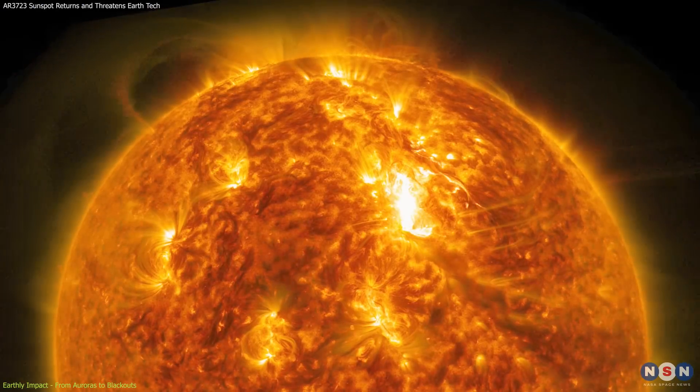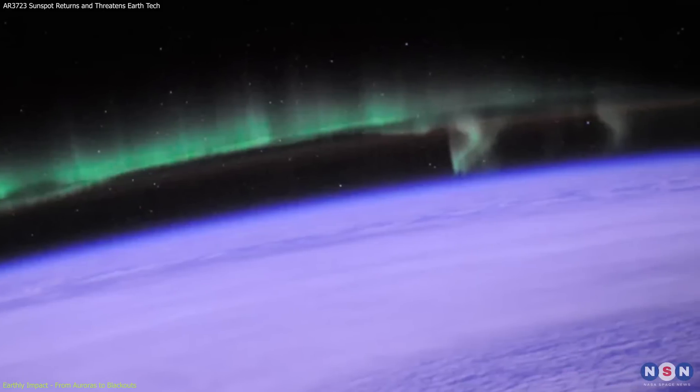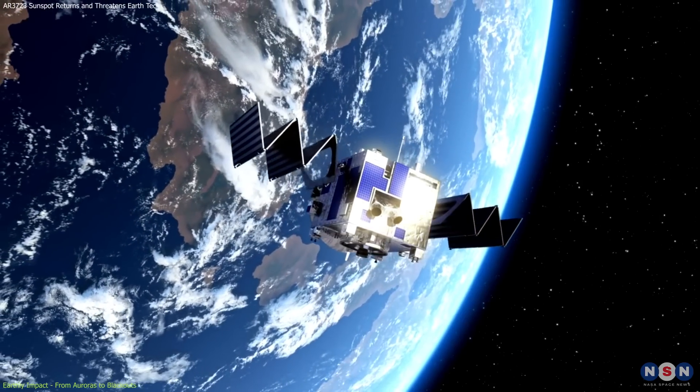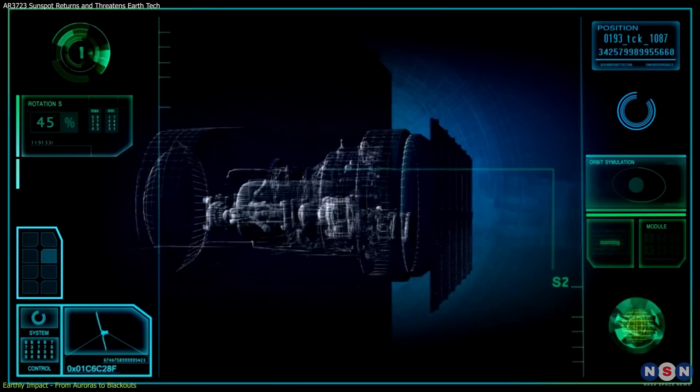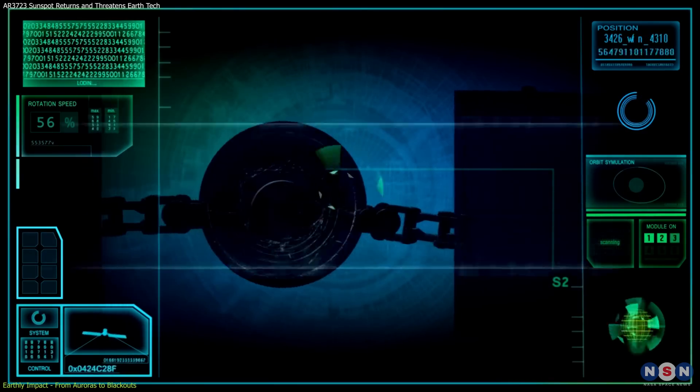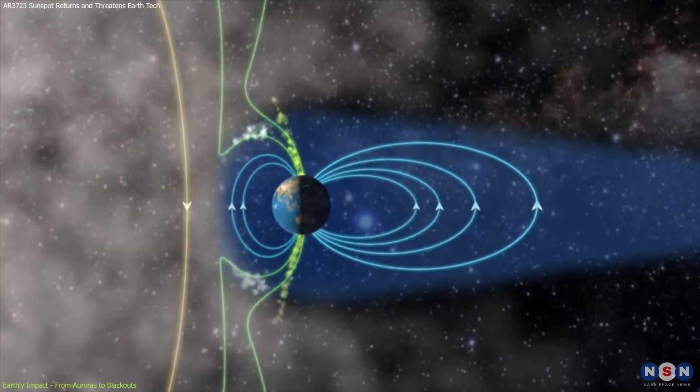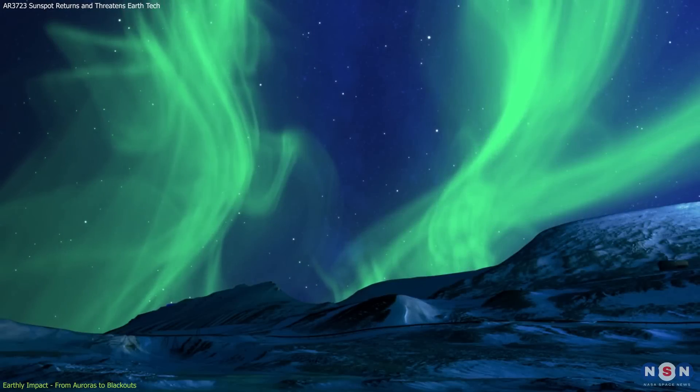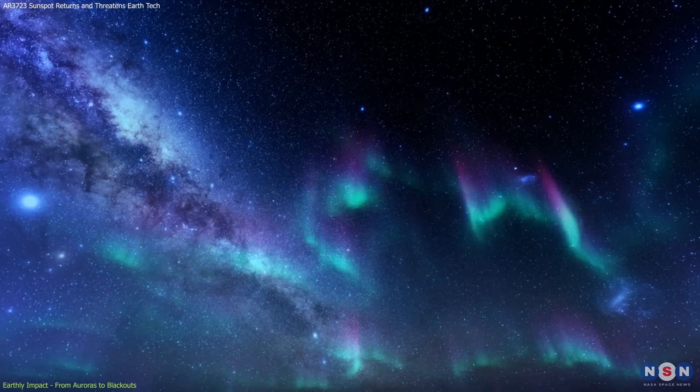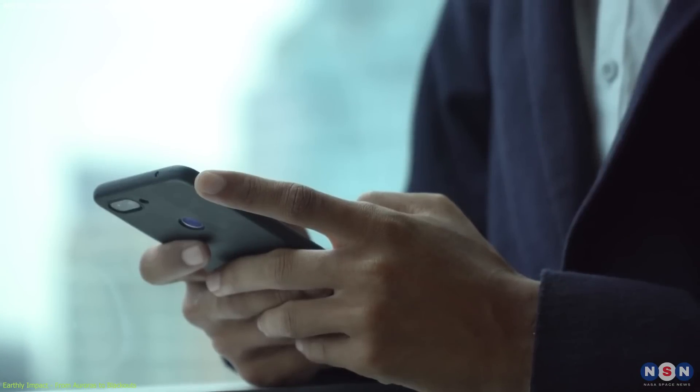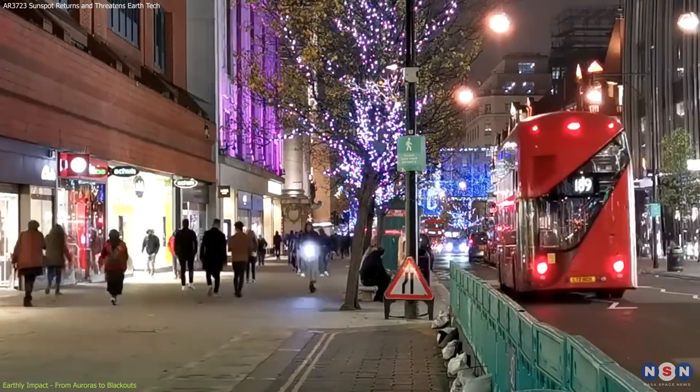Moreover, solar flares heat the Earth's outer atmosphere, particularly the thermosphere, causing it to expand. This expansion not only affects satellite orbits by increasing drag, but also complicates satellite tracking and durability due to the altered atmospheric density. Additionally, the interaction between solar emissions and Earth's magnetic field can produce spectacular auroras and trigger severe geomagnetic storms. These storms pose risks to a broad spectrum of technological systems, from cellular networks to GPS services, and require advanced preparedness to minimize disruptions.